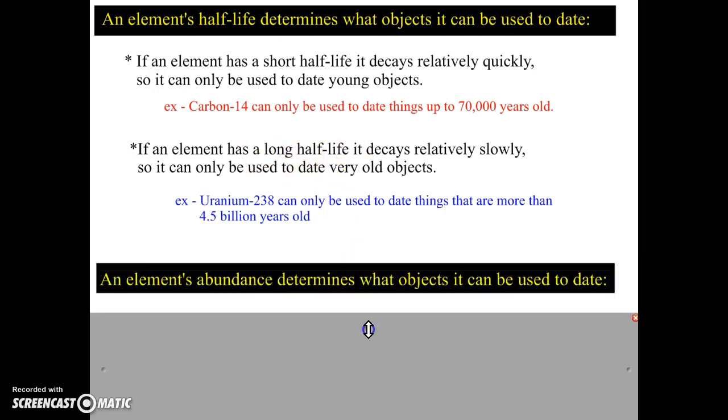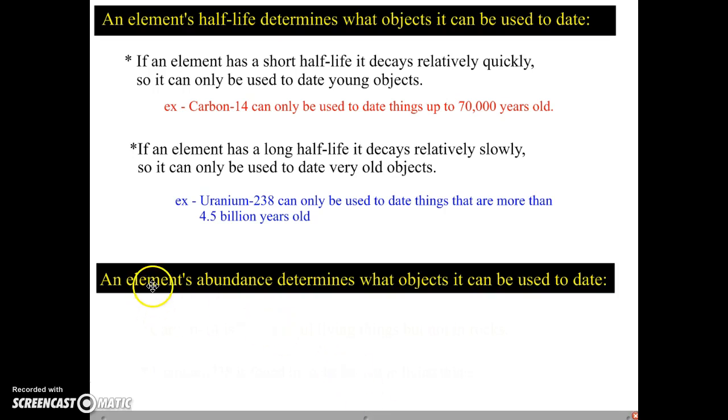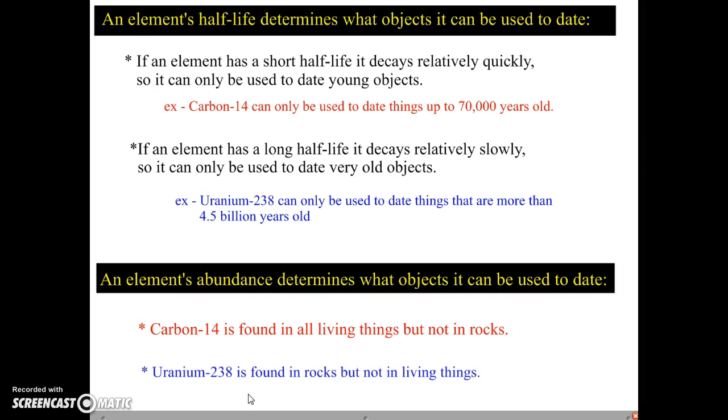The other thing you need to think about is whether your element will be in the object that you're trying to date. All living things have carbon-14. Rocks don't. So if you're trying to find the age of a rock, you would not want to use carbon-14 because the rock doesn't have any of it. Same thing with uranium-238. That one is found in rocks, but it's not in living things. So if you have a fossil, uranium-238 is not going to help you. So you have to know what elements are in each object.